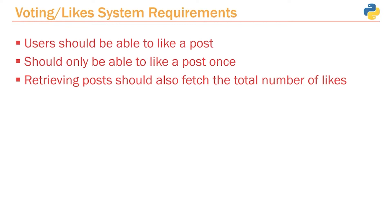The first requirement is that a user should be able to like a post. A user should only be able to like a post once — we shouldn't be able to like a post 10 times and artificially cause the number of likes to go up. And finally, anytime we retrieve a post from our database or from our API, we should also fetch the total number of likes for that post.